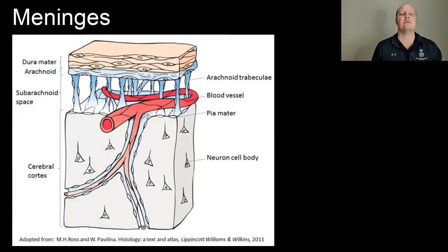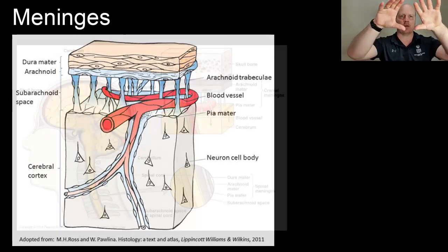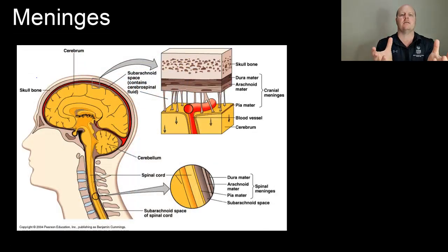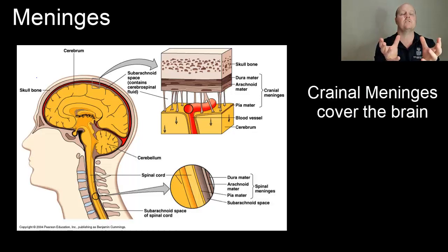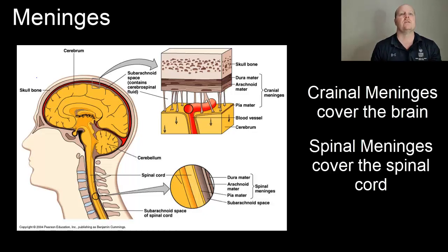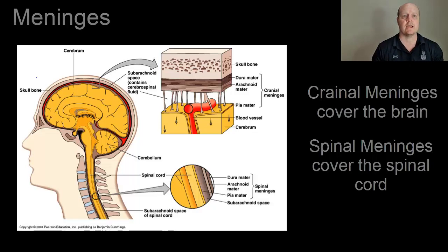Our meninges have blood vessels that branch into the layers to supply oxygen and nutrients. The glad wrap, or meninges, that cover the brain are called cranial meninges, and they're continuous — they keep going and then turn into our spinal meninges, which are the meninges that cover the spinal cord. So our meninges have three layers.